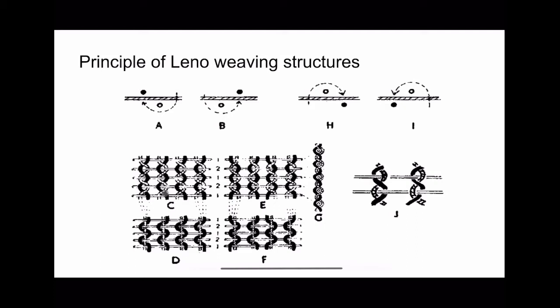We also discussed about structures C and D. In C, both yarns are equally tensed and supplied from the same warp beam, whereas in D the crossing yarn is slightly less tensed, so it is supplied from another warp beam.